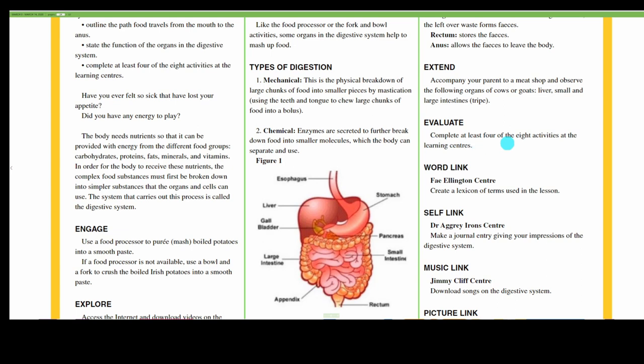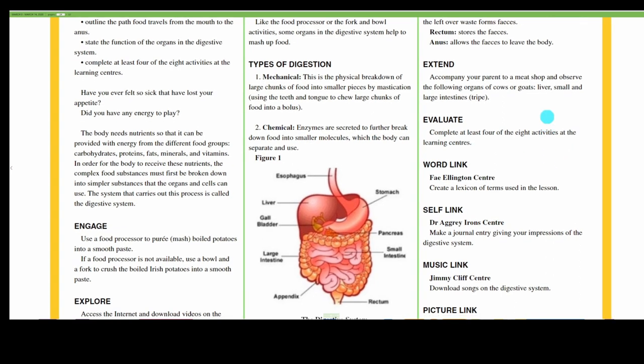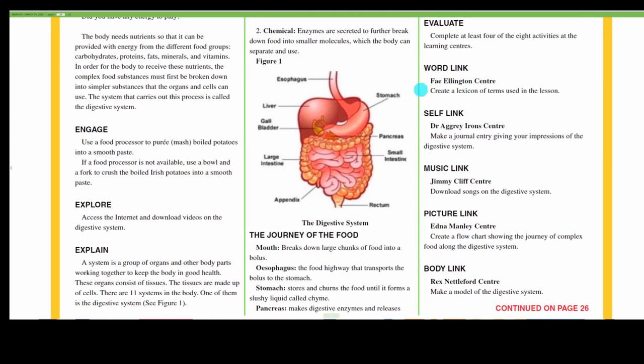Evaluate. Complete at least four of the eight activities at the learning centers. Word link at the Fay Ellington Center: Create a lexicon of the terms used in the lesson. Terms like system, digestion, alimentary canal, esophagus, stomach, liver, large intestine, pancreas, appendix, rectum. Those words could be used.